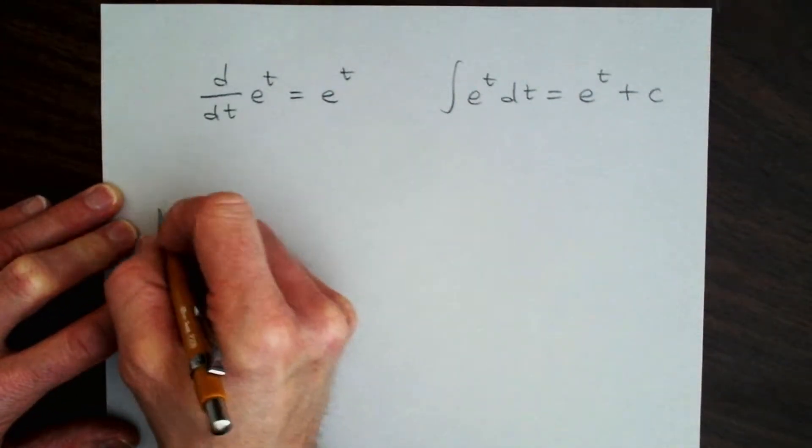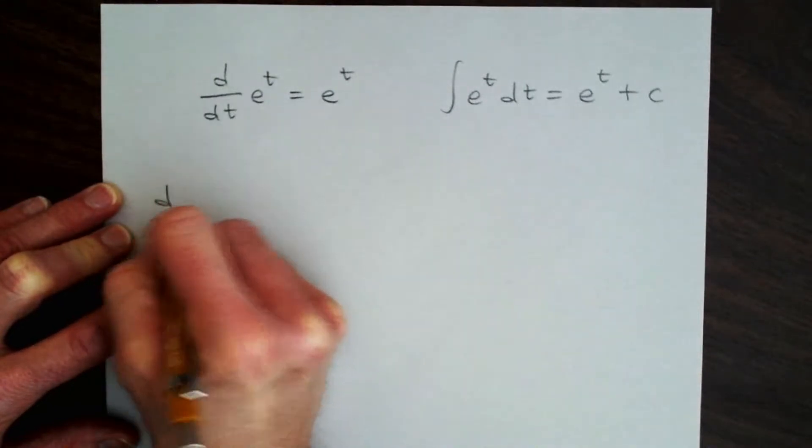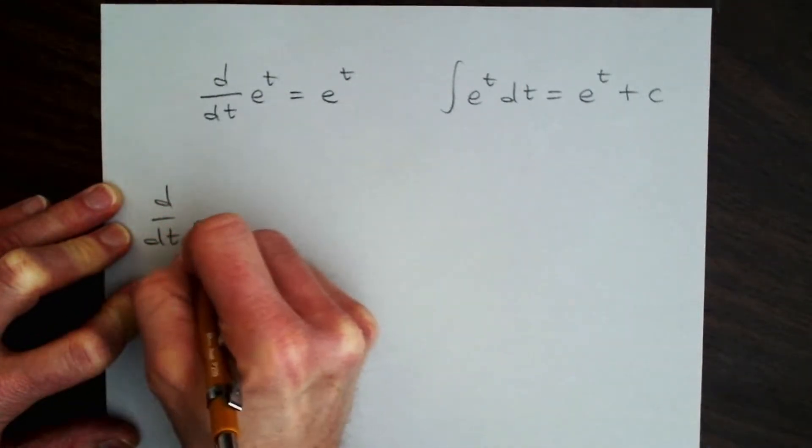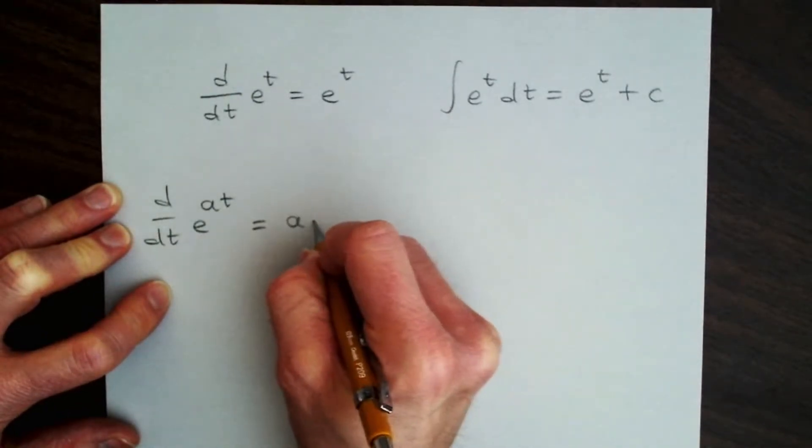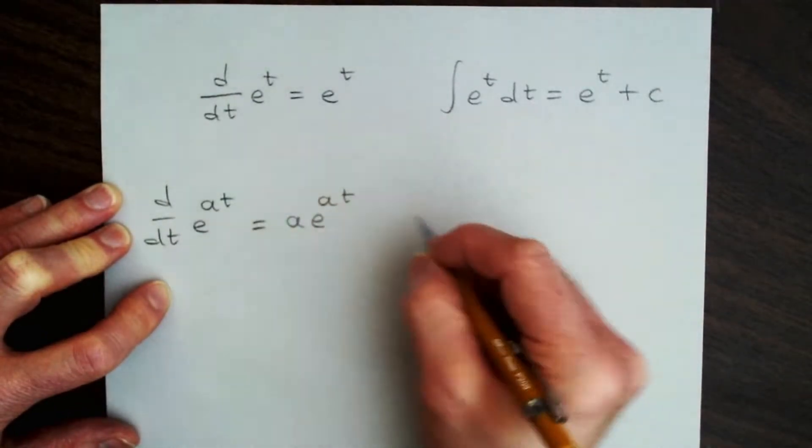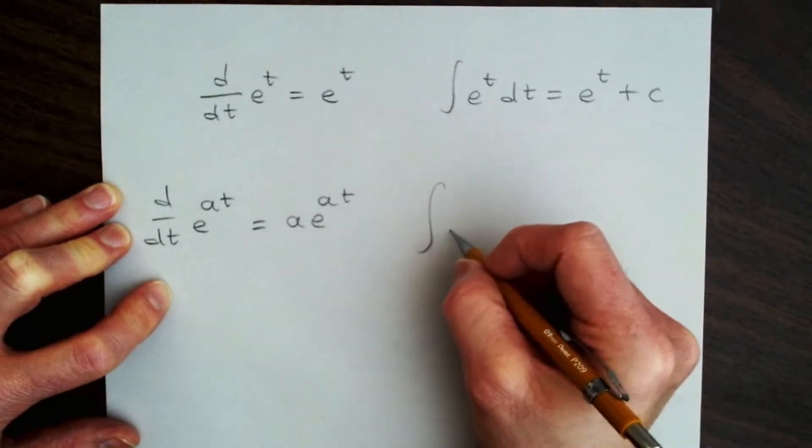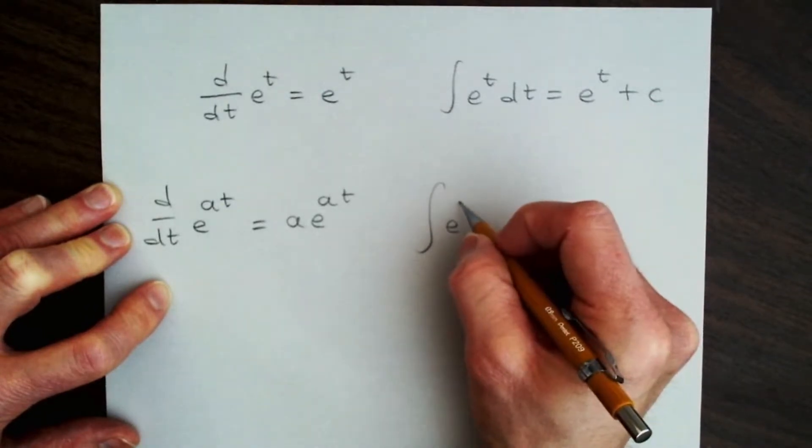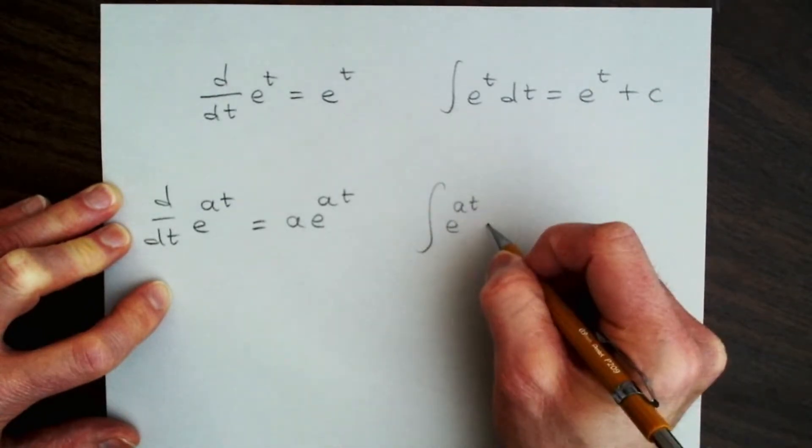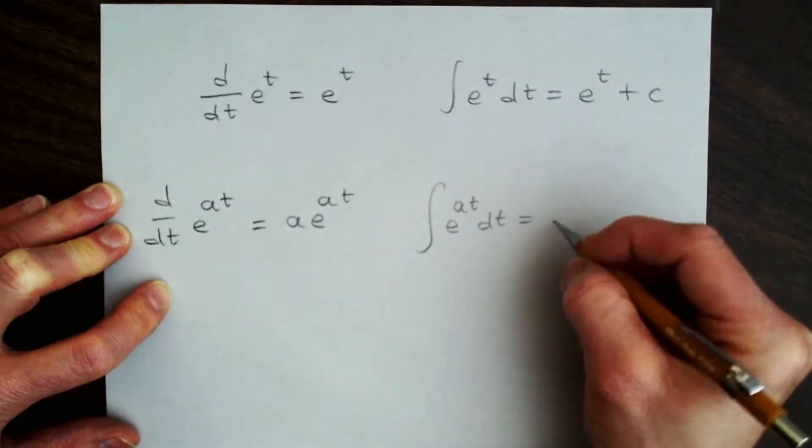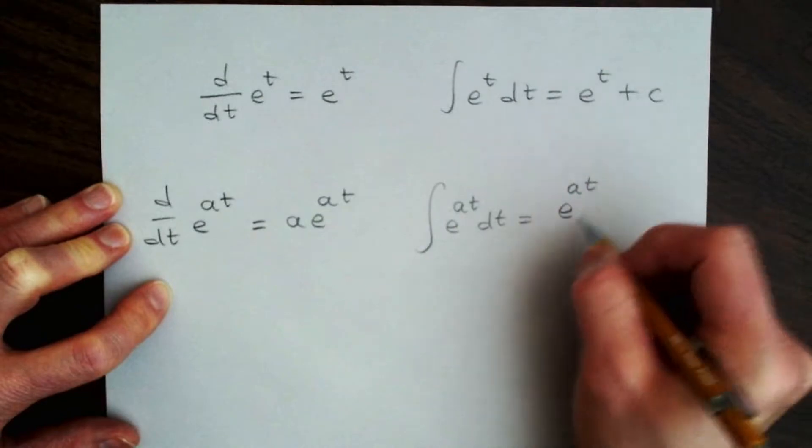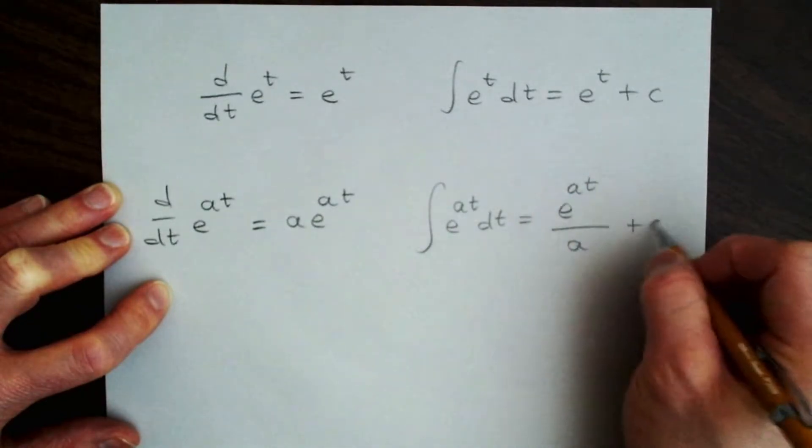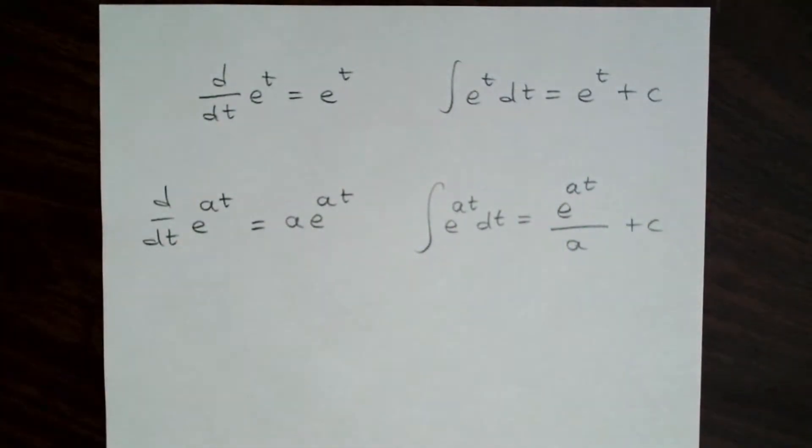A slightly more general version of this is, what if we take the derivative of e to the at? Well, using the chain rule, we'll get a times e to the at. And likewise, we can do a simple change of variables to integrate e to the at, and that will show that the answer is e to the at divided by a, plus c for the indefinite integral.